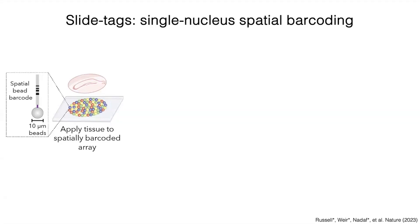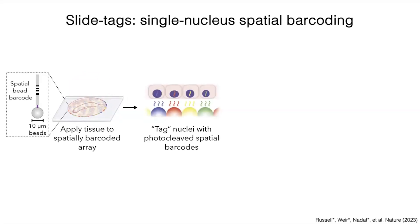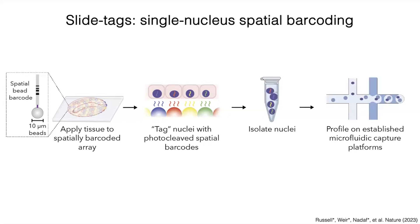We then take a 20 micron fresh frozen tissue section and melt these onto the barcoded bead arrays. Next, we use UV light to cleave these oligonucleotides, and these diffuse into the tissue and barcode individual nuclei.